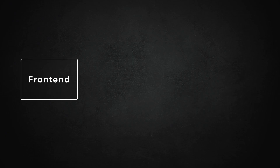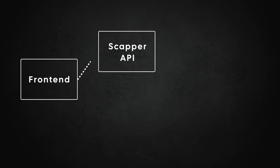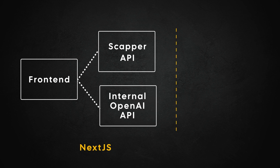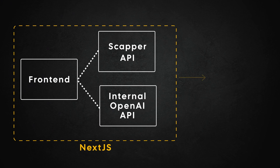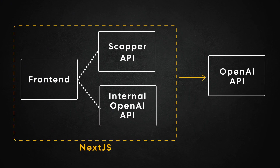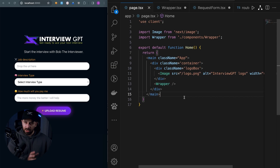For the architecture, we're going to keep it simple. We have a frontend built with Next.js, and it calls two APIs. One API is the scraper with Puppeteer — it scrapes the job description web page. The other is the OpenAI API. Once we have the resume and the job description, we send both to that API, it creates a prompt, sends it to OpenAI, and OpenAI responds to start the chat.